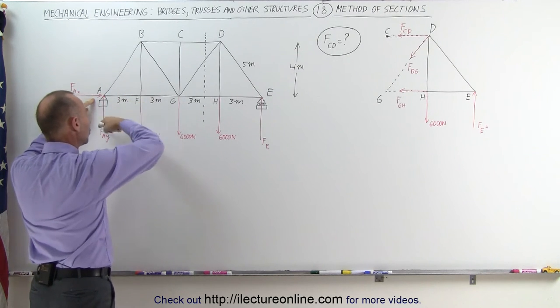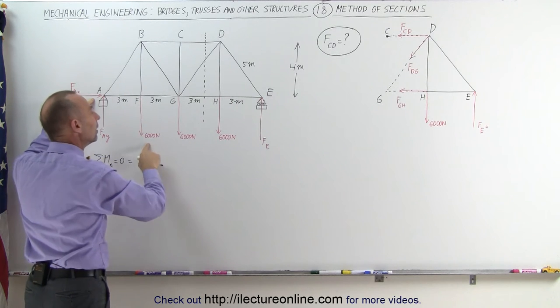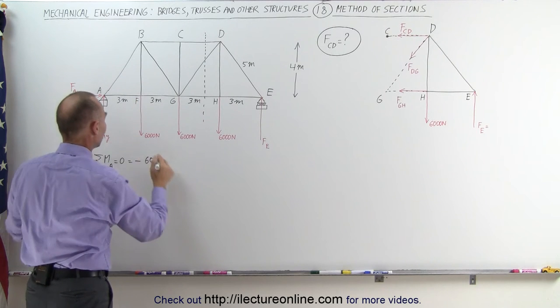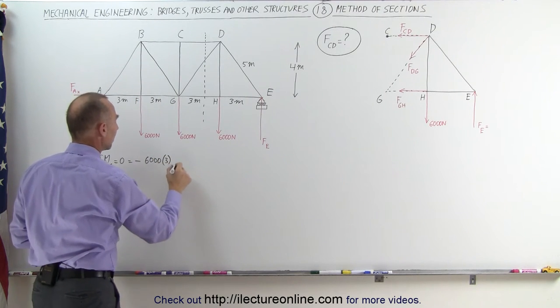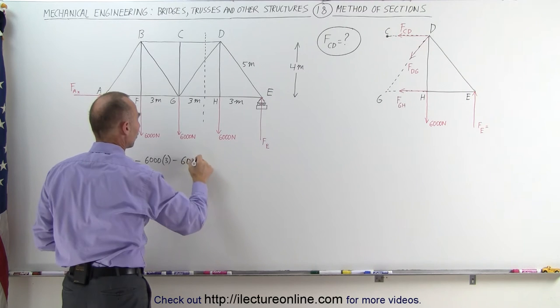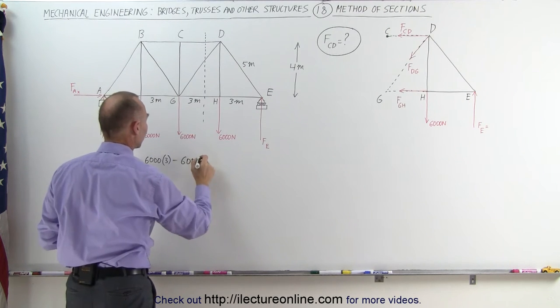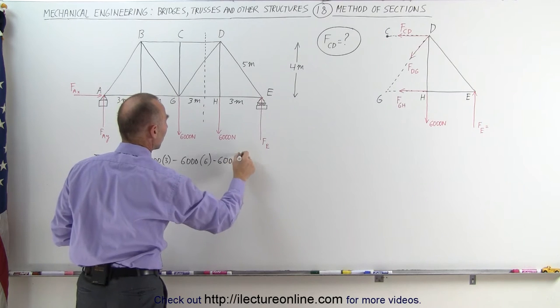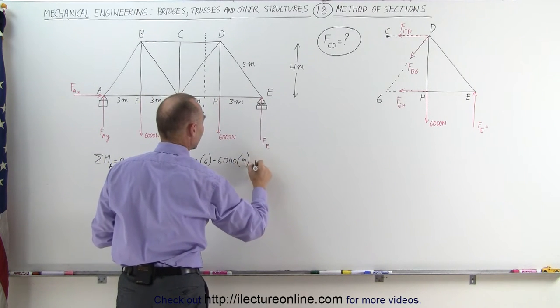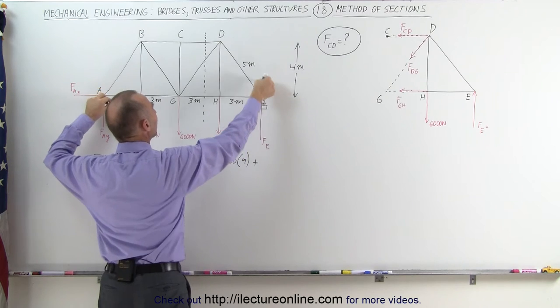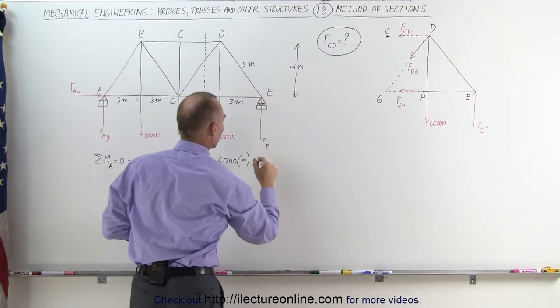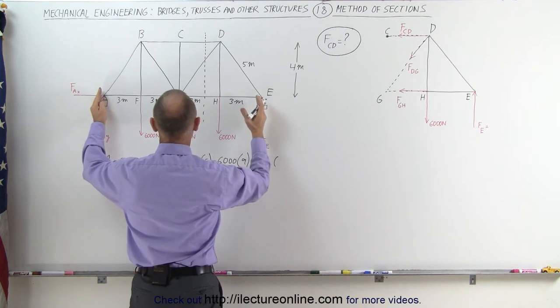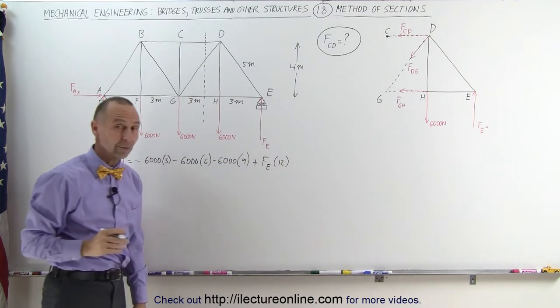Here we have what we call a clockwise moment and that would be negative 6,000 multiplied times the distance which is 3 meters, minus 6,000 for this force right here multiplied times 6 meters, negative 6,000 multiplied times 9 meters, and then plus because this will cause a counterclockwise motion or torque, we get F sub E multiplied times the total distance from there to there which is 12 meters and all that adds up to zero.